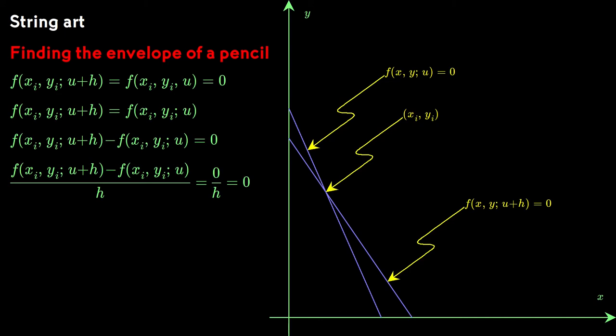And it makes no difference if we divide both sides of the equation by h. As we consider a pair of lines that are getting closer and closer together, h will get smaller and smaller. So we take the limit of the left-hand side as h approaches zero.